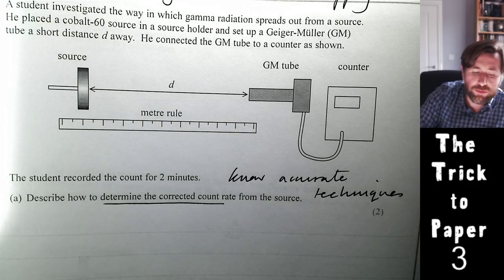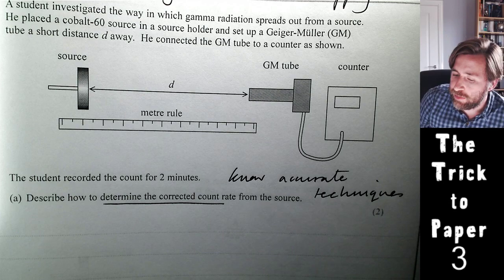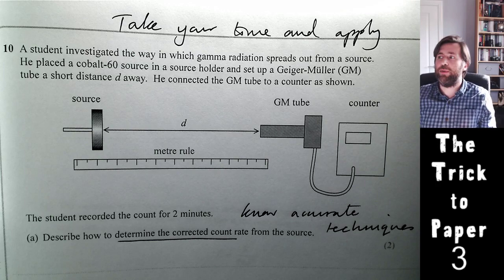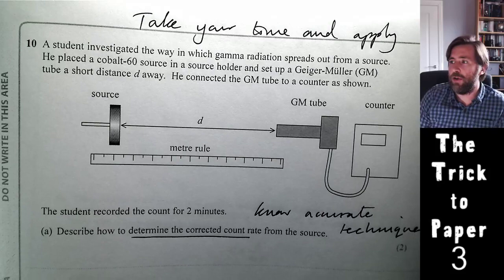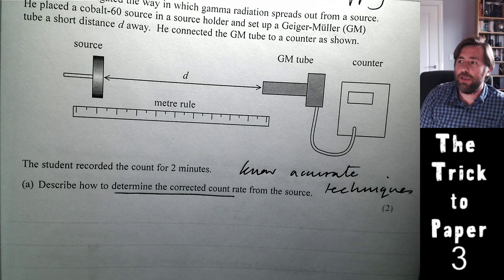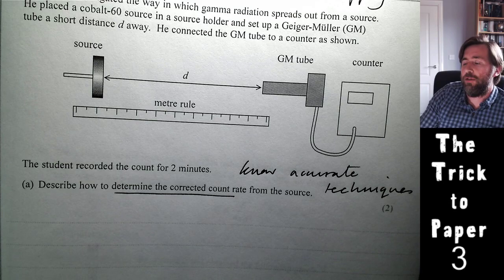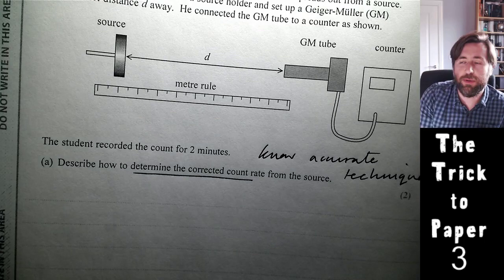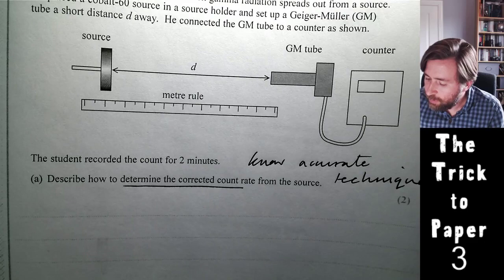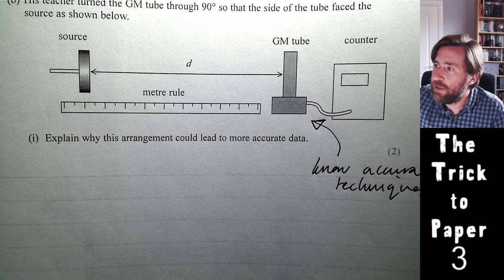The next example: take your time, apply what you know about practicals from watching the core practical live streams. You know the accurate techniques for working with a Geiger-Müller tube. First reading — what do you have to do? 'Determine how to obtain the corrected count rate.' You know this from revising your PAGs — just subtract background radiation. Dr. Lemon gets these marks because he knows the accurate techniques for all core practicals.